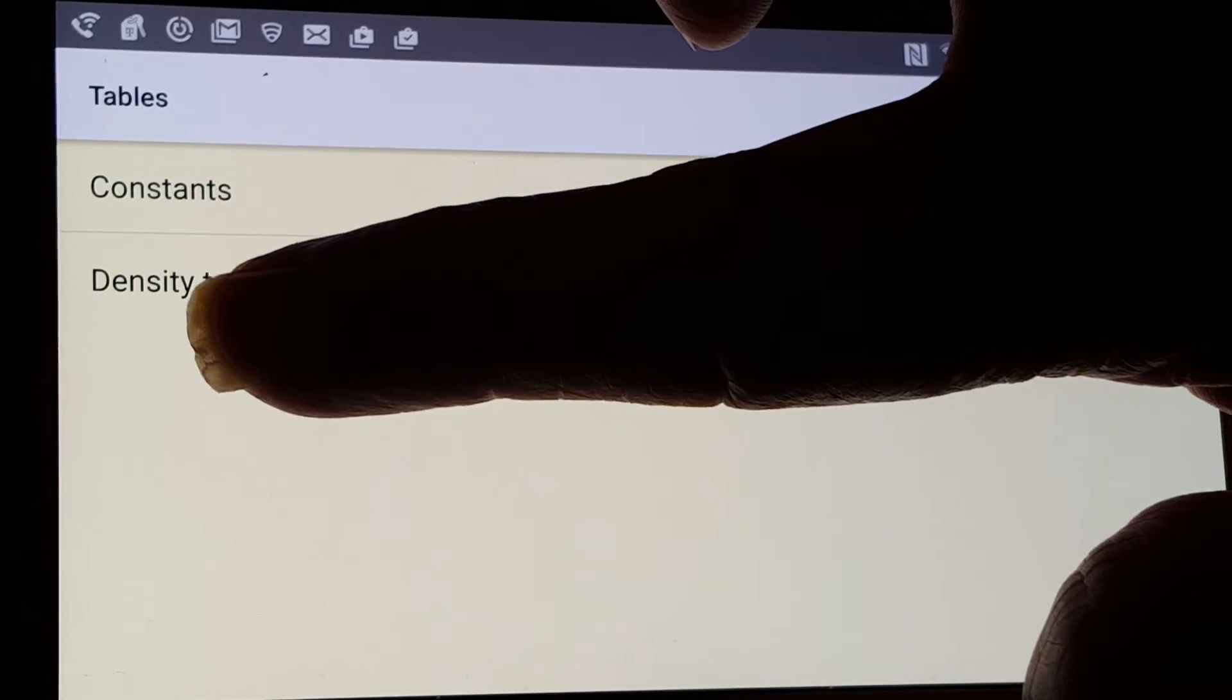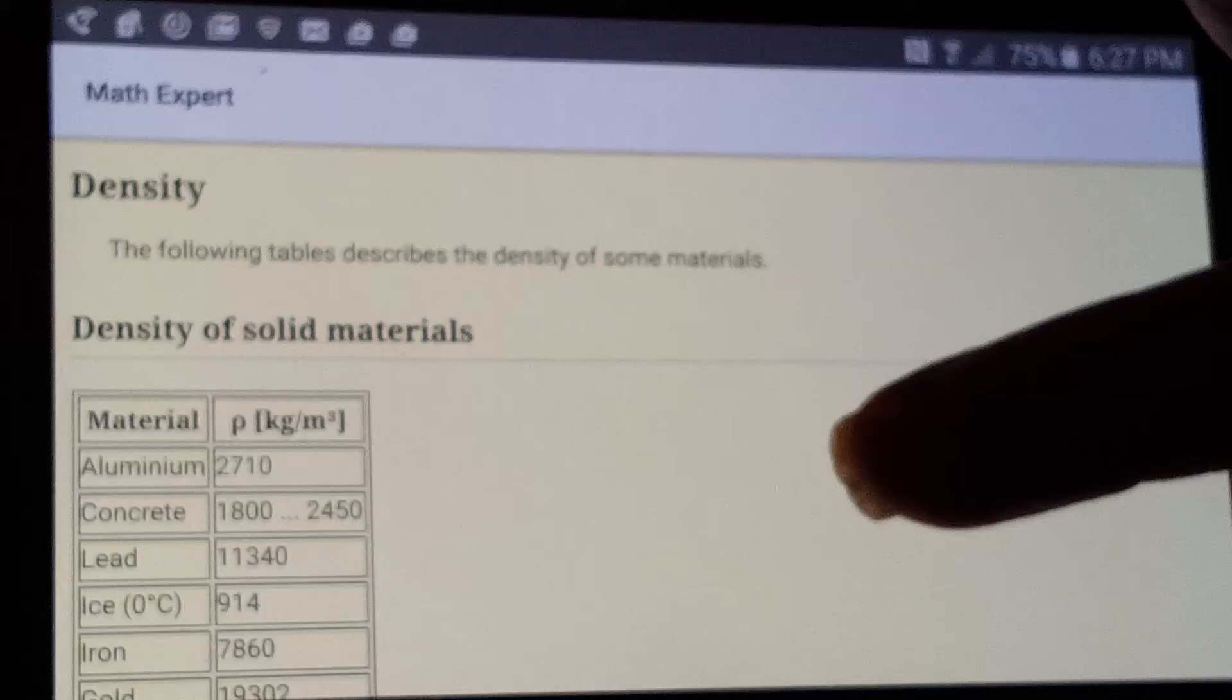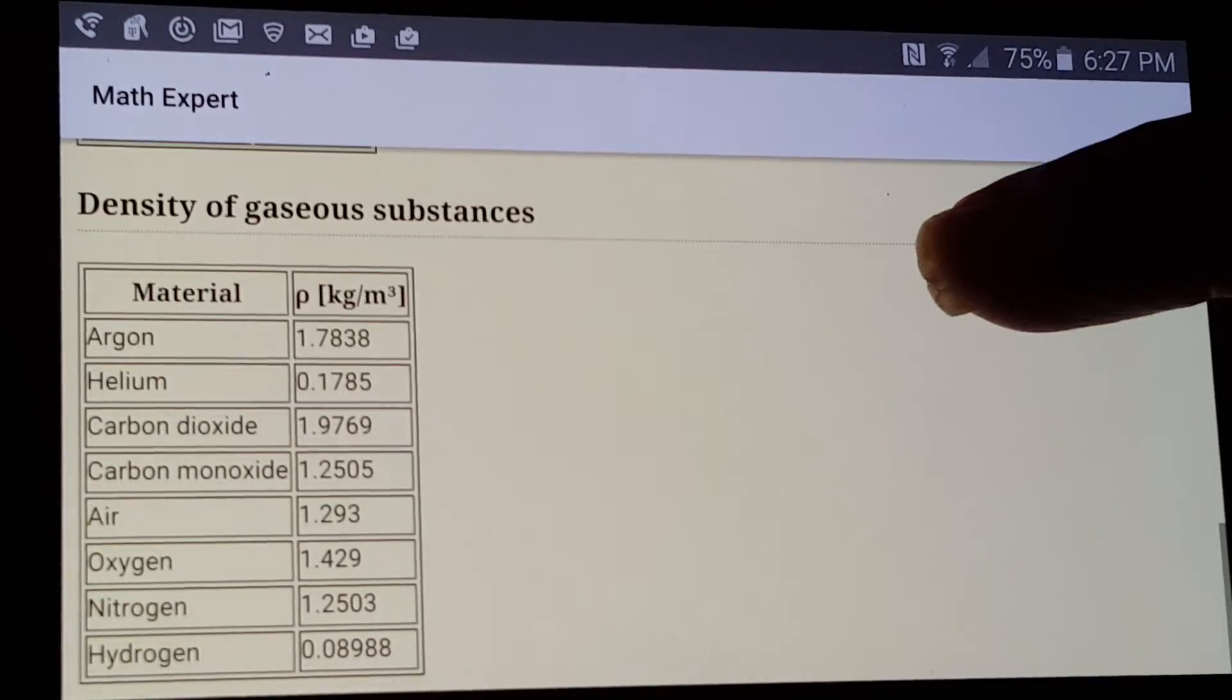Then we also have the density table. And it tells the density of solid materials, density of liquids, and density of gaseous substances.